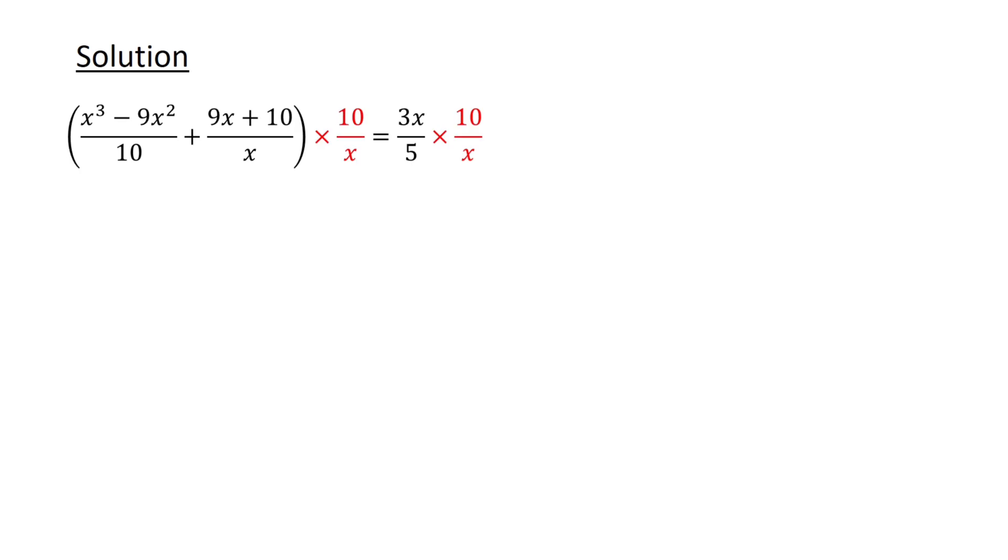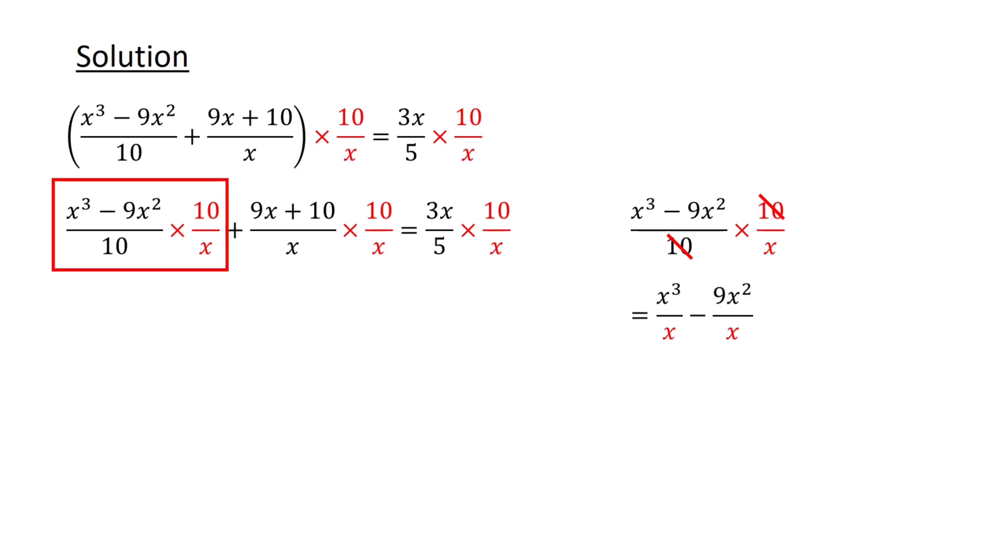First, let's multiply both sides of the equation by 10 over x. Using the distributive property of multiplication over addition, the left-hand side splits into two terms. In the first term, the tens cancel each other out, and we get x cubed over x minus 9x squared over x, which becomes x squared minus 9x.